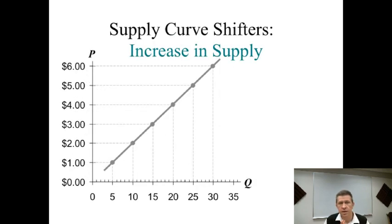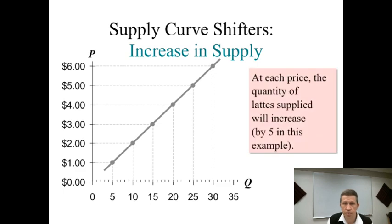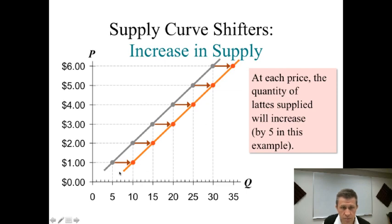So if you have an increase in supply, what you'll see is a shift to the right. So going through this example, this is continuing with the latte example. In this particular example, at each price, there's five, a quantity, five more are supplied. So at a dollar, instead of five being supplied, 10 are supplied. Two dollars, instead of 10 being supplied, 15 are supplied, and so on. We have an entire new supply curve. The whole supply curve has shifted, and it's shifted to the right.